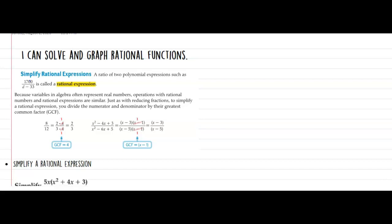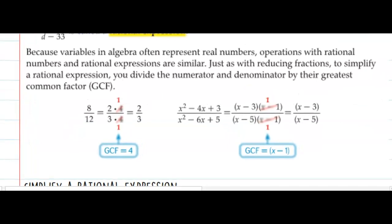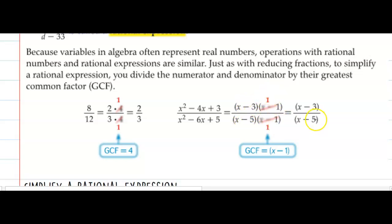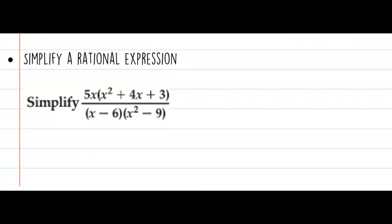That's what makes it a rational expression. Now let's think back to when we used to simplify fractions. When we wanted to reduce 8/12 into lowest terms, we basically split 8 into its factors, and we did the same with 12 — 3 times 4. Any number over itself cancels out. So when we have a rational expression, we're going to do the same thing: factor the numerator, factor the denominator, and if any factors are identical, they cancel to give us a simpler rational expression in lowest terms.